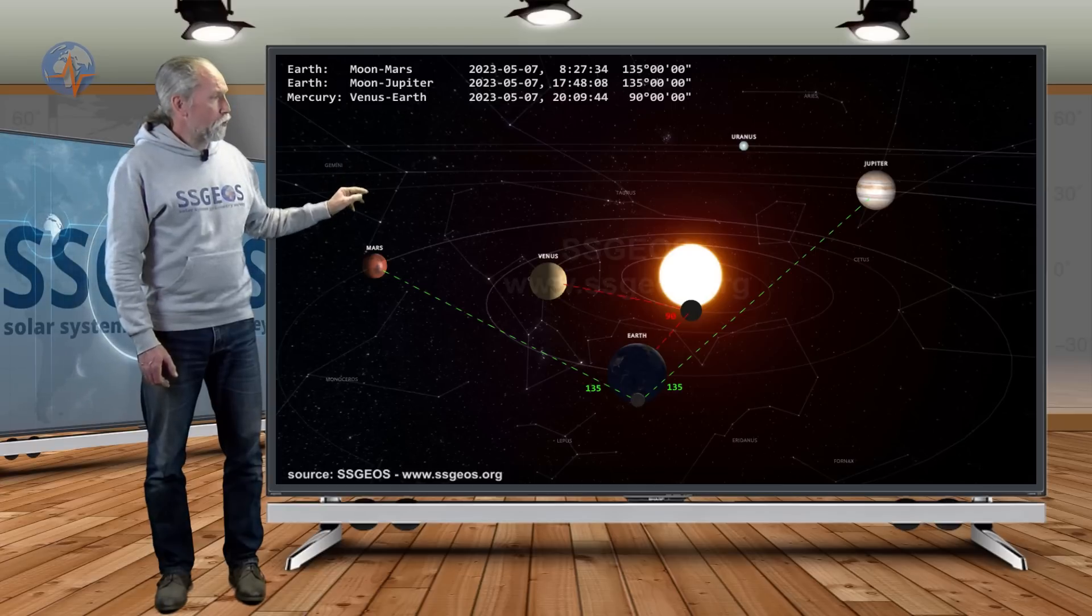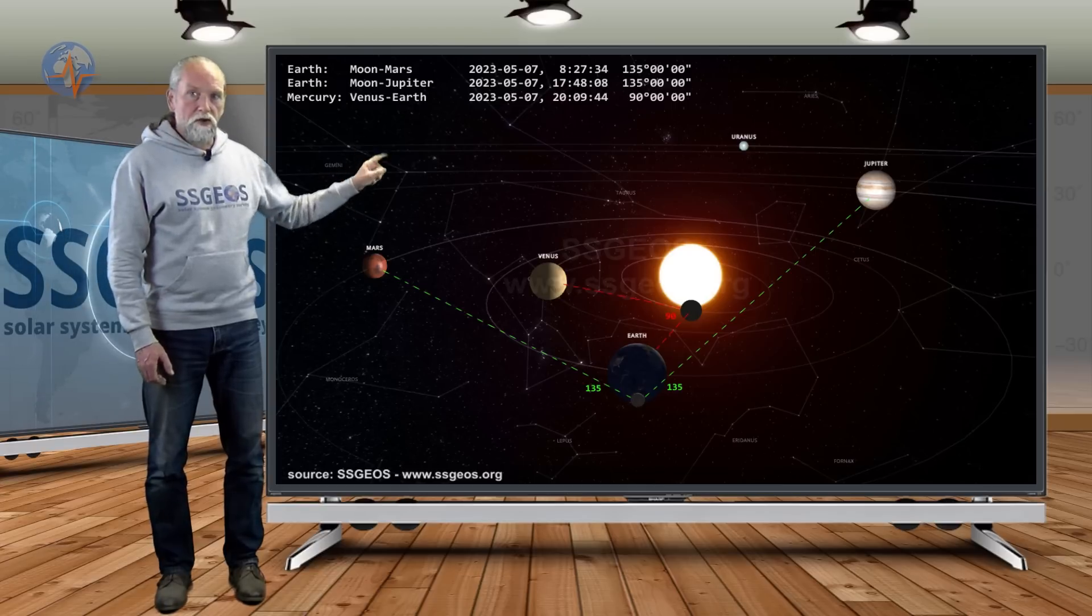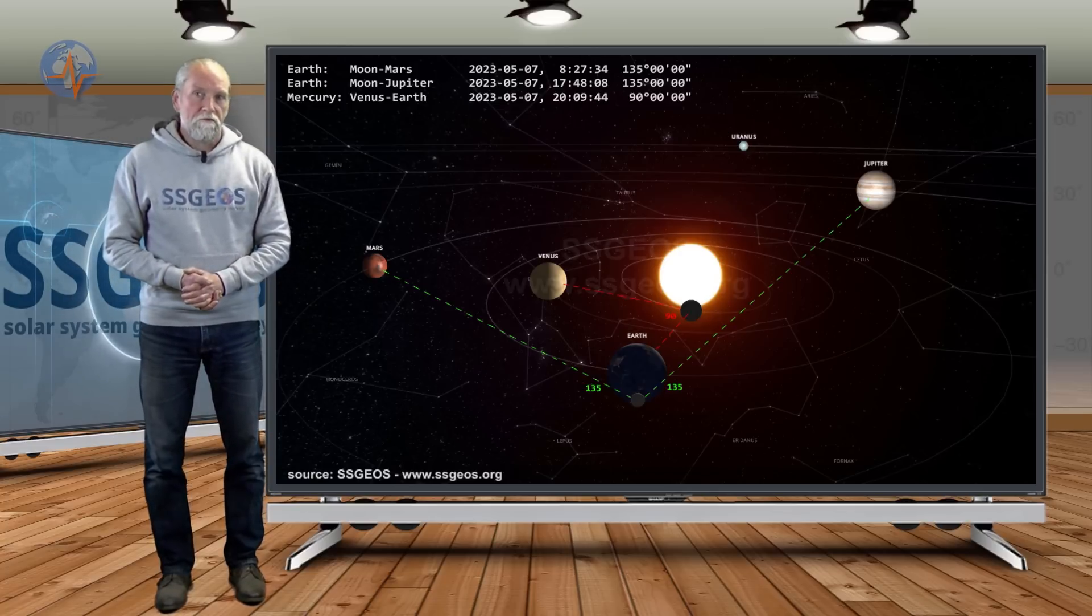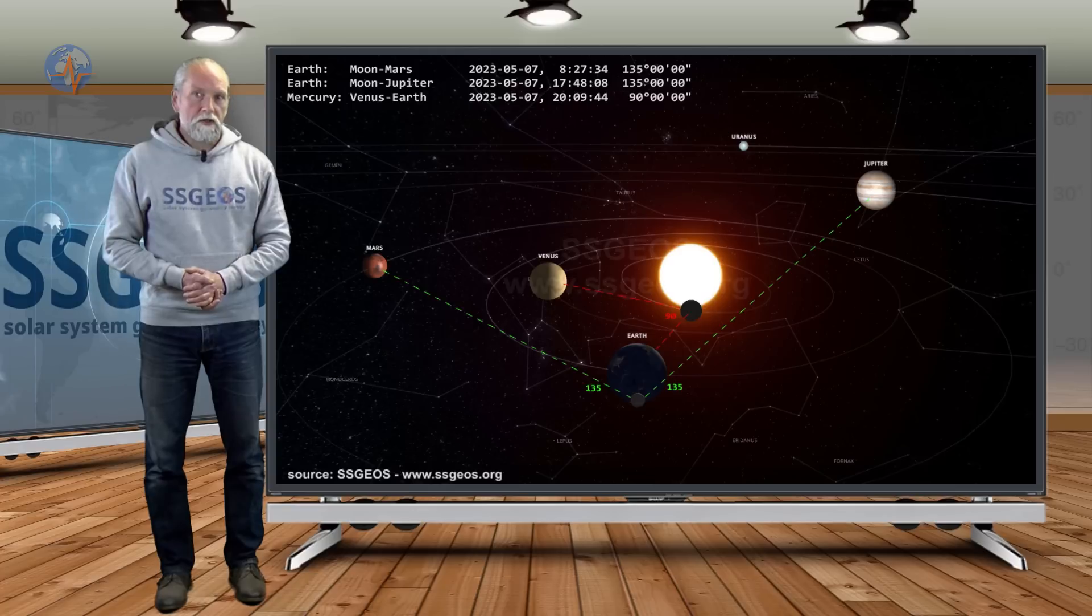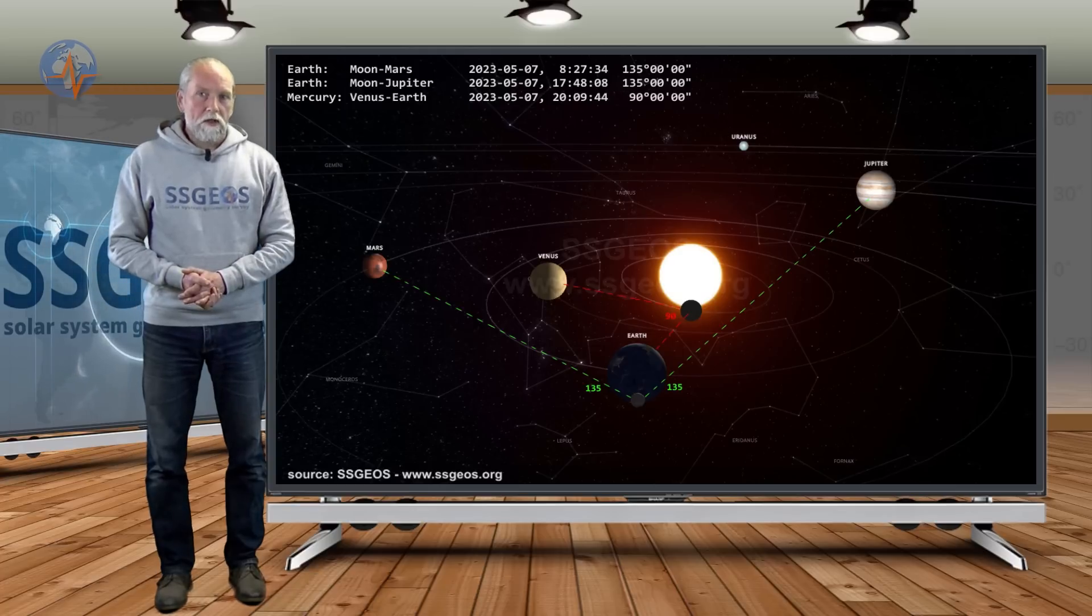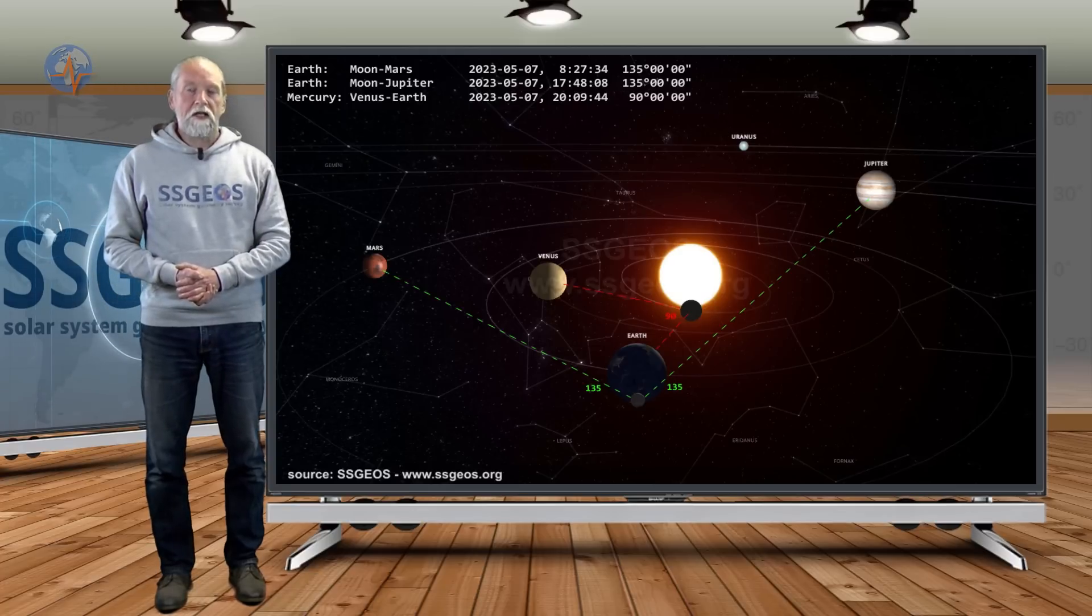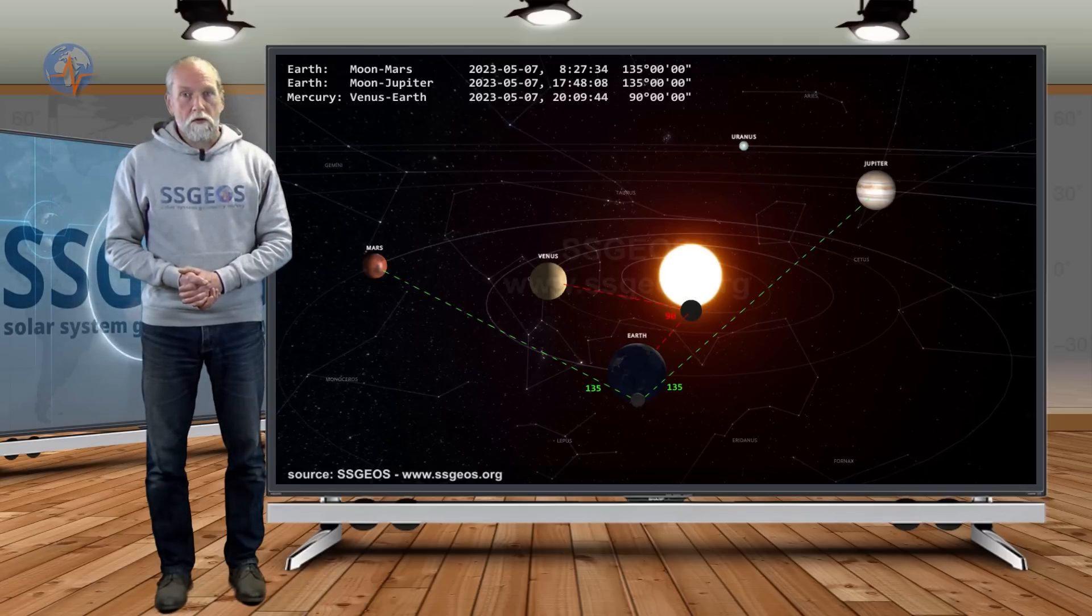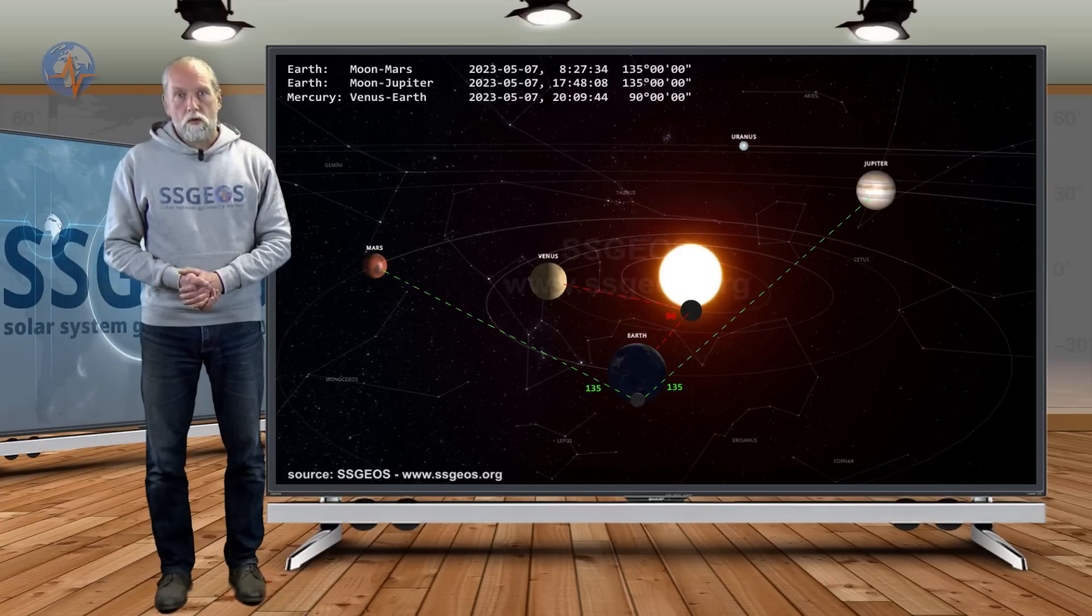We also see some lunar geometry involving Mars and Jupiter and these are 135 degree angles and that adds to the geometry that we have today. We could see some stronger seismic activity as a result, probably around the 8th, that's tomorrow, give or take one day. It could be later today already, it could be tomorrow or on the 9th.